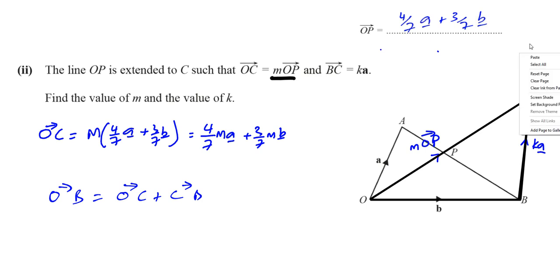So as I was saying, O to B is the vector b. O to C is what I just wrote down over here. 4 over 7 times m a plus 3 over 7 times m b. That's O to C. And C to B, C to B is minus ka. Because ka is going from B to C. It says B to C is ka. I'm going in the opposite direction. That's been minus ka.